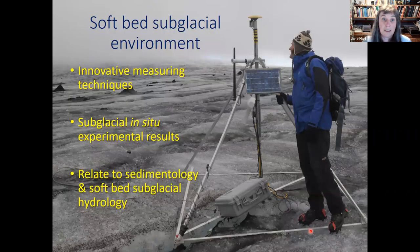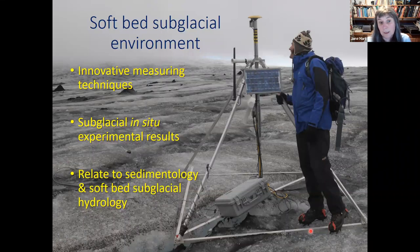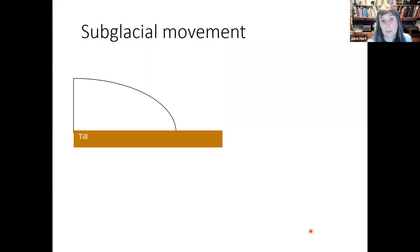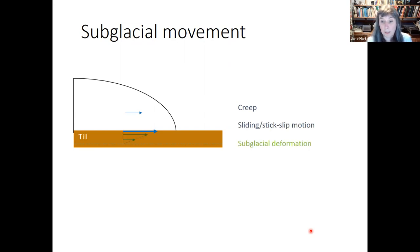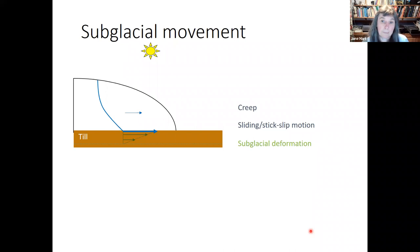What I want to talk to you about today is innovative techniques of measuring the subglacial environment, some results from our in-situ experiments, and then briefly relate this to sedimentology and soft-bed subglacial hydrology. As a quick reminder: glaciers move by creep, by sliding stick-slip motion at the glacier bed, but also by subglacial deformation, which I'm going to be talking about a lot today. The sun shines on the glacier surface, melts the surface, and water goes down to the bed, and the glacier shoots forward and also increases subglacial deformation.